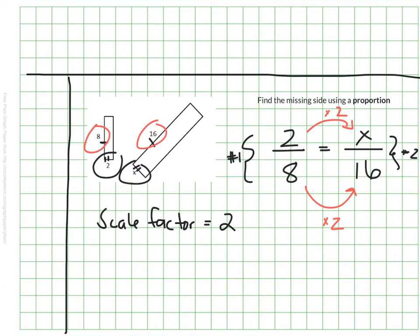So 2 times 2 will tell me my missing side. And of course, 2 times 2 is 4. So that means my missing side, the missing side, or x, must be 4. That's a pretty friendly, straightforward example.